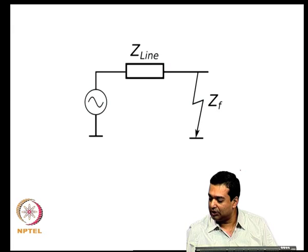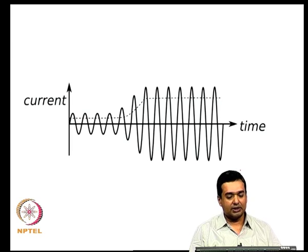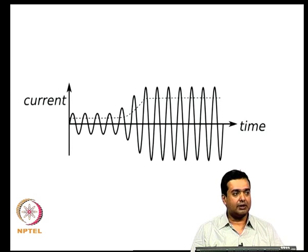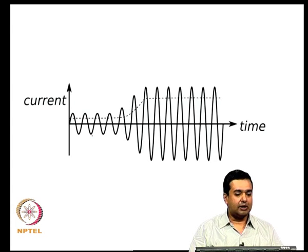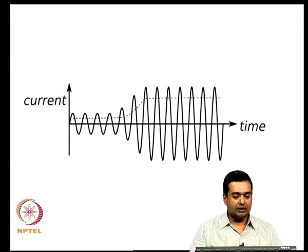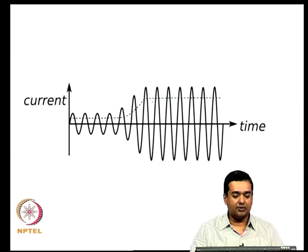One thing to consider when looking at fault current models in power systems and distribution system traditional protection applications: when you are talking about current levels and voltage levels, you are talking about things in an RMS time frame. If you look at the instantaneous currents, they might be going in a sinusoidal manner — your ideal voltage is a sinusoidal voltage, your current is a sinusoidal current going from a peak to a negative peak through zero — but if you look at it on an RMS basis, say if you have a fault, the current level is increasing.